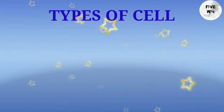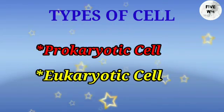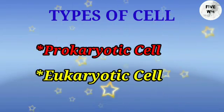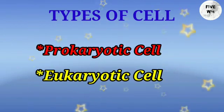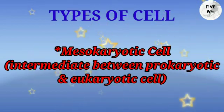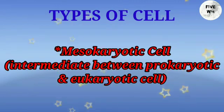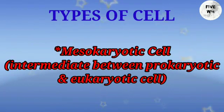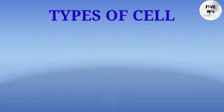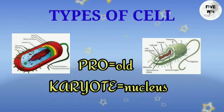Now, types of cell. Based upon the development of the nucleus, cells are mainly divided into two categories: prokaryotic cell and eukaryotic cell. There is also a mesokaryotic cell, which is intermediate between prokaryotic and eukaryotic. 'Pro' means old and 'karyote' means nucleus.